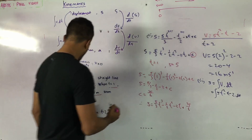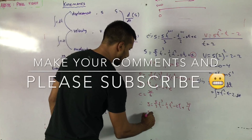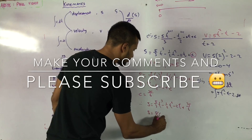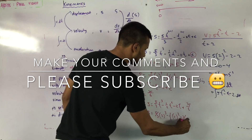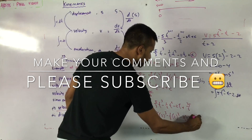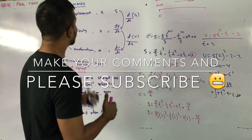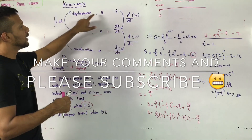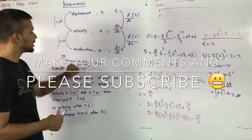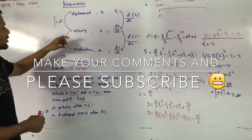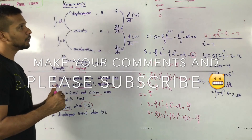The question asks for displacement from O when t = 2. Simply substitute t = 2 into s = (5/3)t³ − (1/2)t² − 2t + 35/6. Once you remember the key relationships — differentiation takes you from displacement to velocity to acceleration, and integration takes you back — this becomes straightforward. Differentiate for velocity, differentiate again for acceleration; integrate acceleration for velocity, integrate again for displacement.